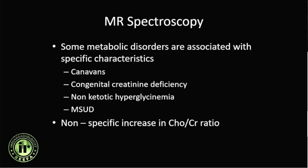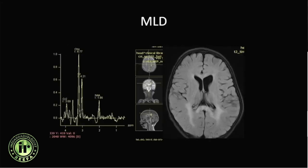In addition to diffusion, spectroscopy is performed in most patients with metabolic disorders. While most metabolic disorders will show non-specific findings of increased choline-to-creatine ratio and reduction in NAA, some disorders are associated with specific characteristics — such as Canavan's disease, congenital creatine deficiency, non-ketotic hyperglycinemia, or MSUD. In a patient with metachromatic leukodystrophy, spectroscopy may help monitor the progressive increase in choline-to-creatine ratio or reduction in NAA, though it adds little additional diagnostic information when the diagnosis is already known.